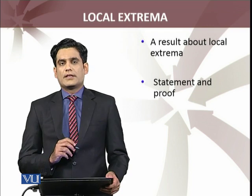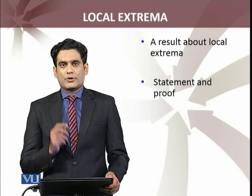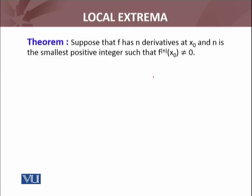Before proving this, let me recall a very important lemma जो अभी हमने proof किया है. Lemma states that if the nth order derivative at x equals x naught exist करता है, then we can write f of x in terms of this one, where e and x इसका function है — इसको हमने proof किया अभी. यह lemma जो है इसको recall कीजिएगा while I am going to state and prove the theorem.